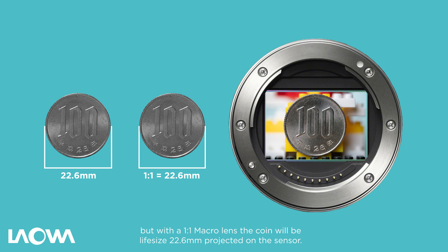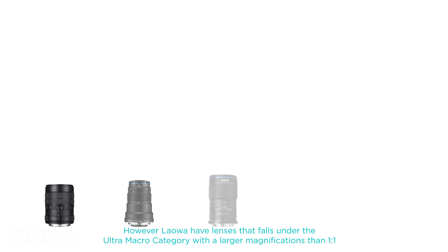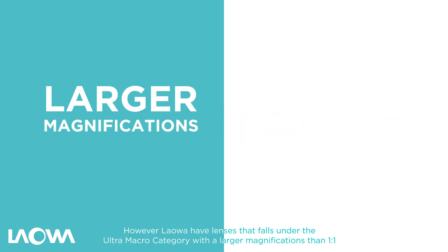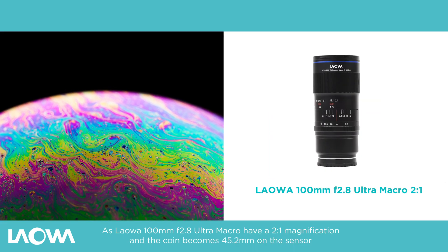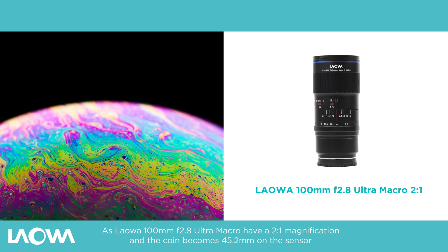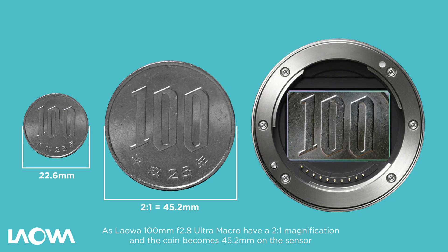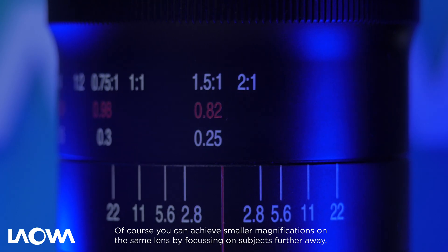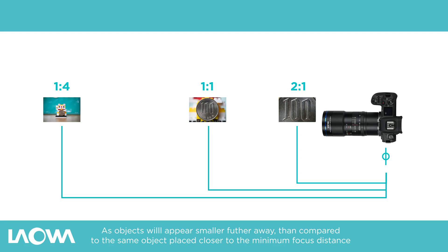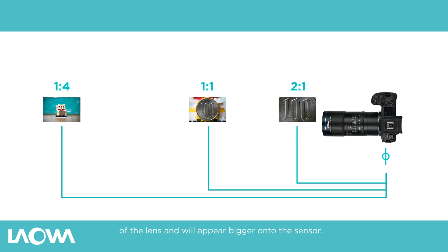With a 1 to 1 lens, the coin will be life-size at 22.6 millimeters projected onto the sensor. However, Laowa have lenses that fall under the ultra macro category with larger magnifications than 1 to 1. The Laowa 100 millimeter f/2.8 ultra macro lens has a 2 to 1 magnification, making the coin 45.2 millimeters on the sensor. You can also achieve smaller magnification on the same lens by focusing on subjects further away, as objects appear smaller at greater distances.